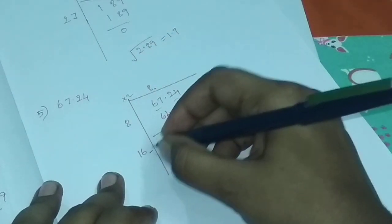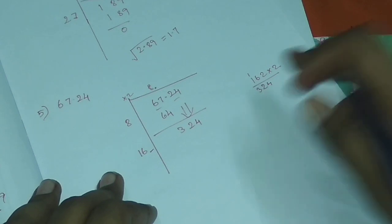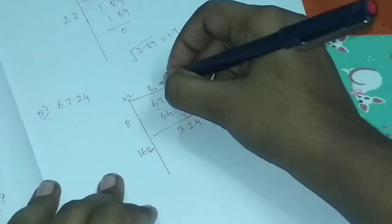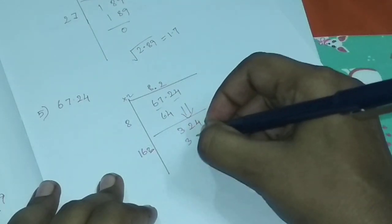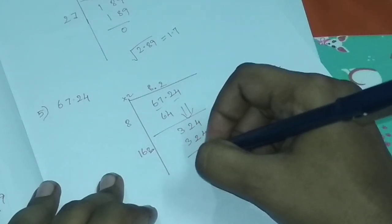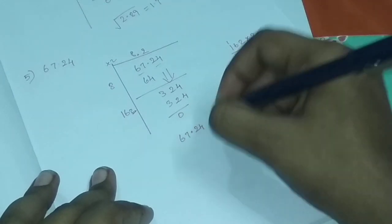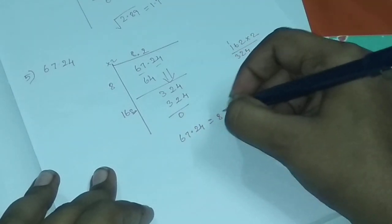This means we will get a number. When I write 2 first, I will get the answer. So I will tune here. 3, 2, 4, I will get the answer. So the square root of 67.24 is equal to 8.2.